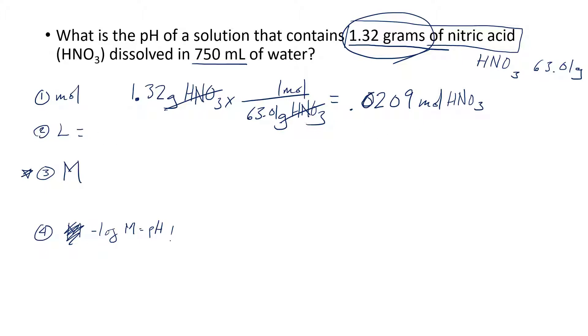Now we got to find the volume in liters. 750 mL is basically 0.750 liters, so the molarity is 0.0209 moles of HNO3 divided by 0.750 liters. The molarity that I found was 0.0279 M of H+ (again, assuming that nitric acid just dissociates completely). To find the pH, that's just equal to the negative log of that number: 0.0279. Do that and I get a pH of 1.58. Done and done.